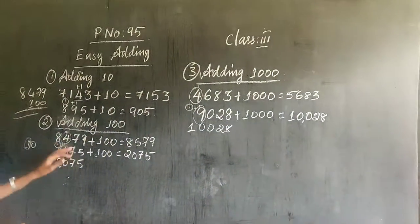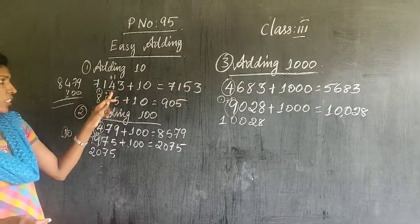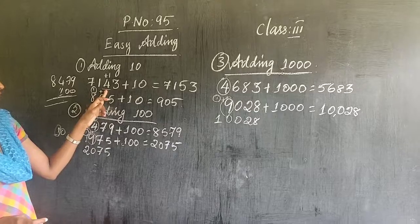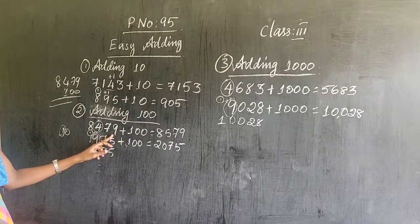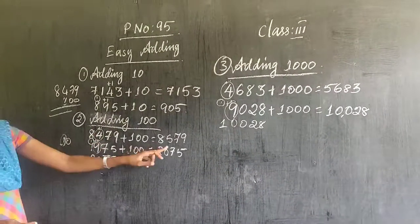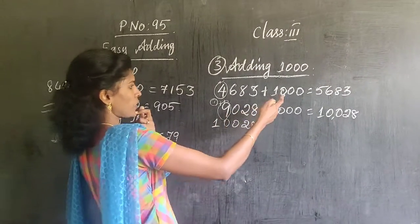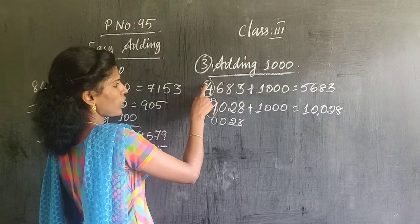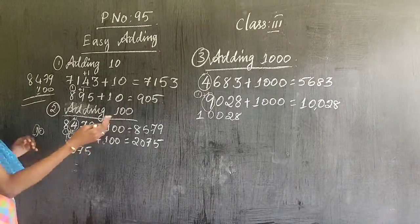Once again, to summarize: adding 10 is easy — just directly add 1 to the digit in the tens place; all other digits remain the same. Adding 100 means you add 1 to the digit in the hundreds place. And adding 1000 means you add 1 to the digit in the thousands place. The remaining digits stay the same.